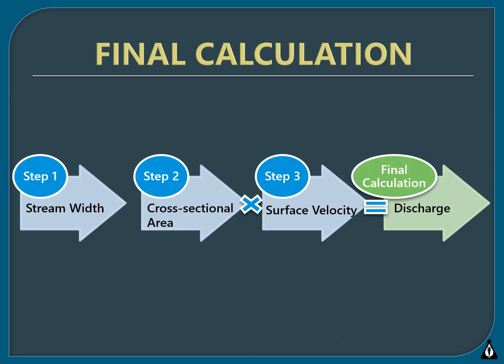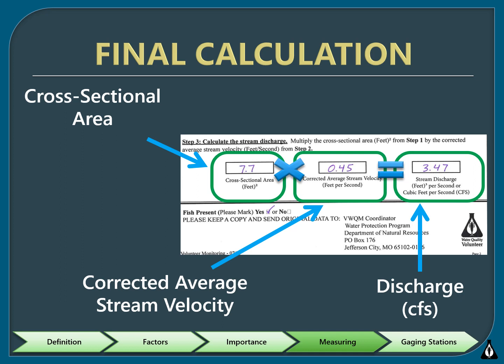The last step is multiplying the cross-sectional area by the corrected surface velocity to get stream discharge. Find your cross-sectional area from the front of the datasheet and multiply by the corrected average stream velocity from the back. The answer is recorded in cubic feet per second. For our example of a 7.7 square foot cross-sectional area with a corrected velocity of 0.45 feet per second, the stream discharge is 3.47 cubic feet per second. Congratulations — you just calculated your first stream discharge!